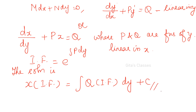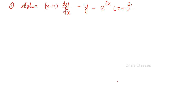So there are only two forms in linear — very easy. You can expect one definite question from linear. If you understand linear, then only you can do Bernoulli. One definite question can be expected from linear or Bernoulli. Now let us solve the equation.